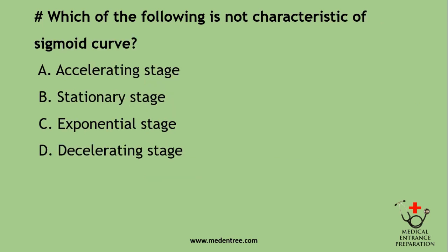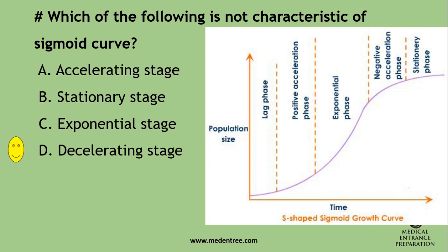Which of the following is not a characteristic of the sigmoid curve? The sigmoid curve is seen in the population of a species as well as during the growth curve of human beings. The options are: differential growth curve, Scammon's growth curve (which is also sigmoid), accelerating stage, stationary stage, exponential stage, and decelerating stage. The correct answer is decelerating stage.